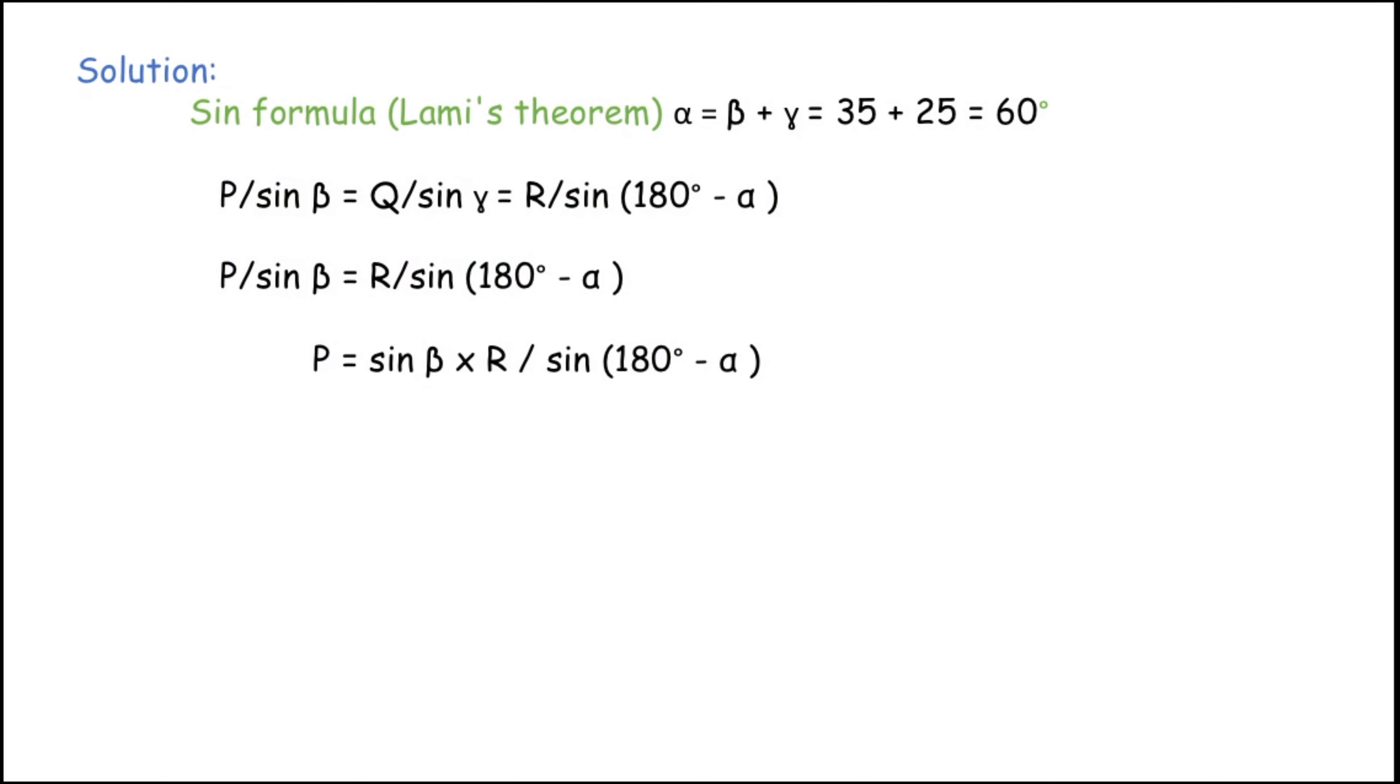Now substitute the value of beta, R, and alpha: P = sin 35° × 400 / sin(180° - 60°), the value is 120°, sin 120°. So P = 229.2 / 0.866.